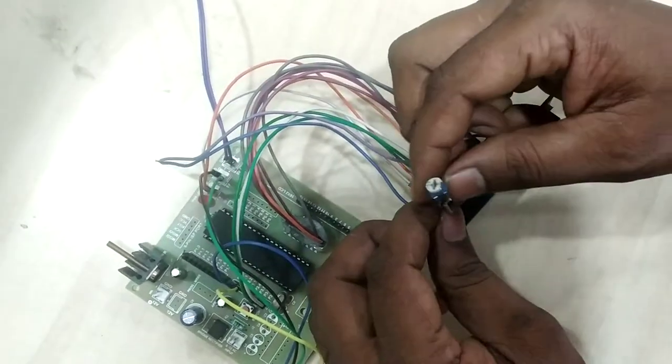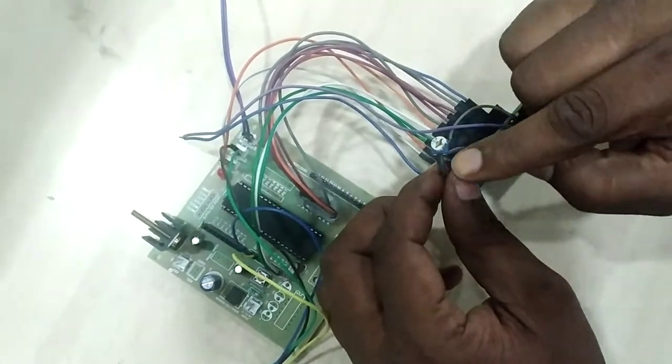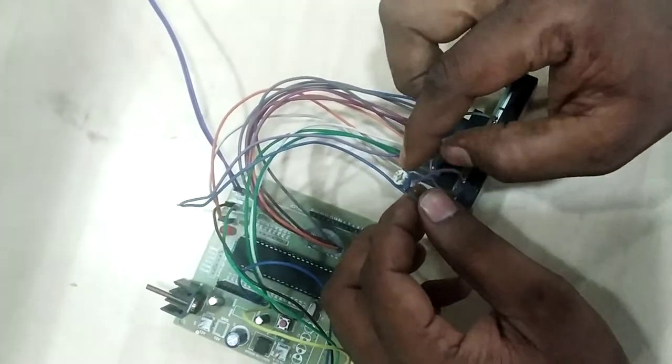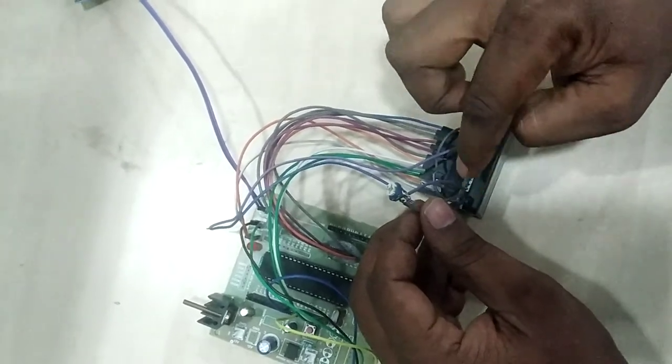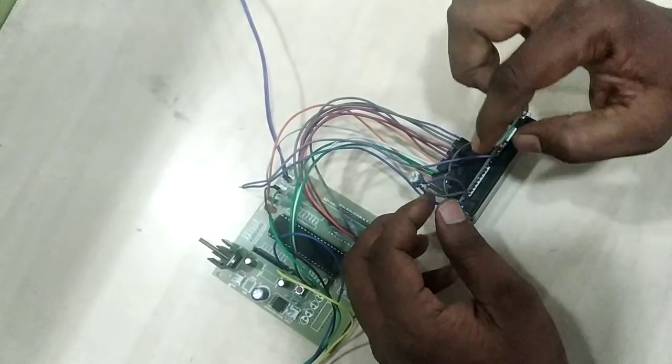The variator pin from this variable resistor, one pin is variator and other two pins are VCC and ground. This variator pin is given to 3rd pin from the LCD. And the two pins, one is given to VCC and other one is given to ground.